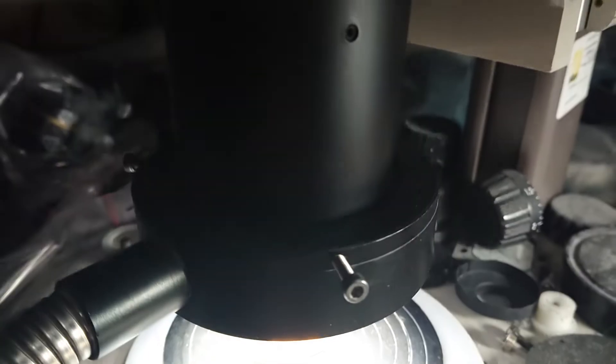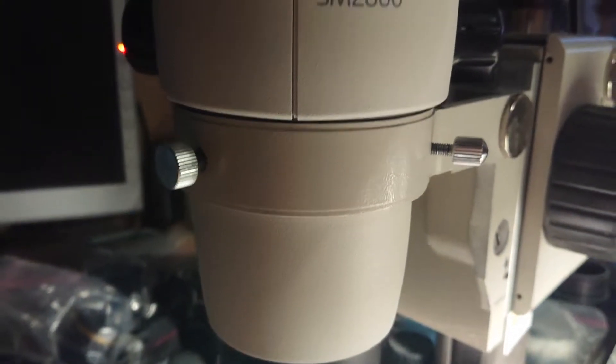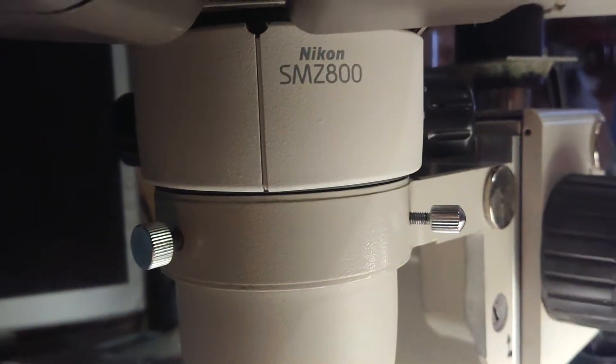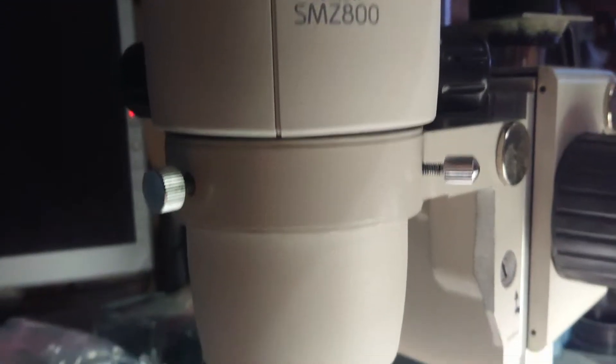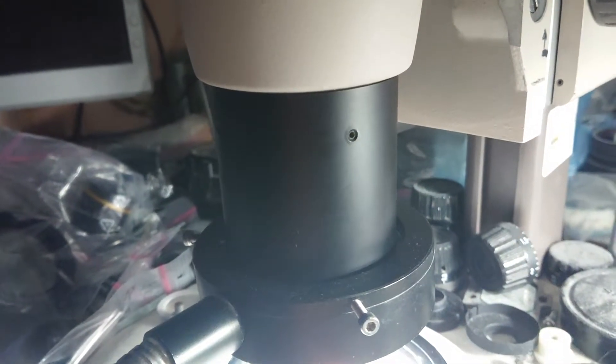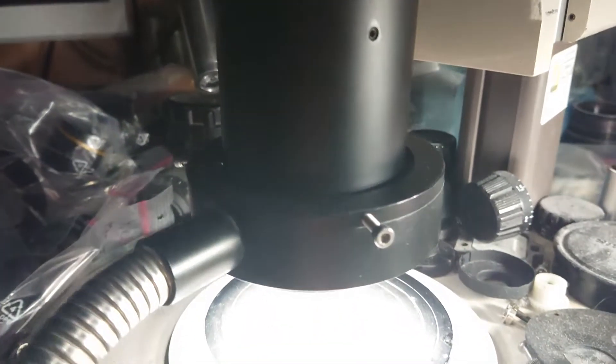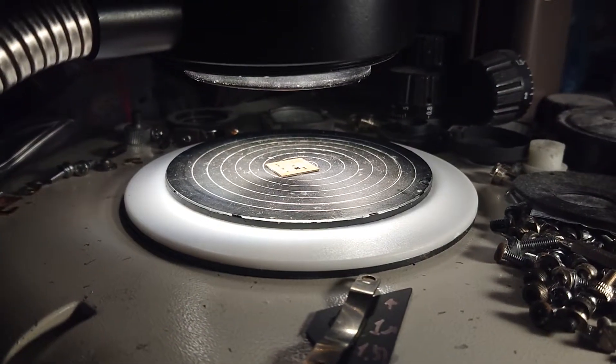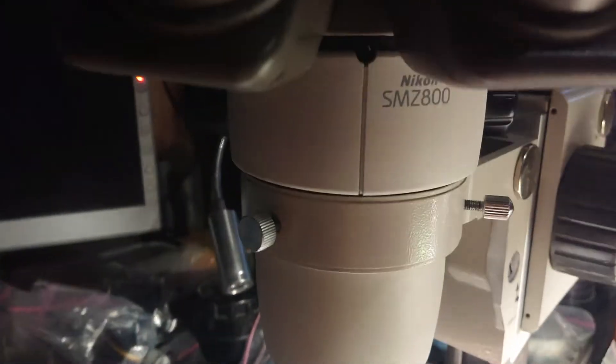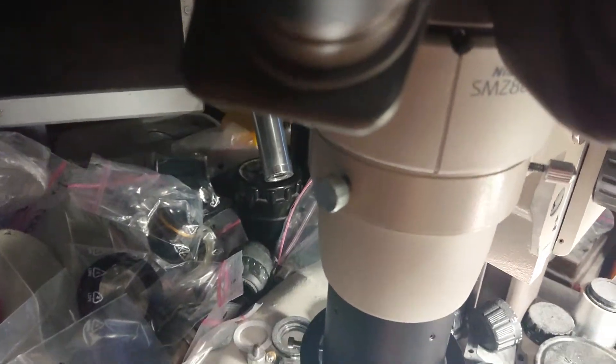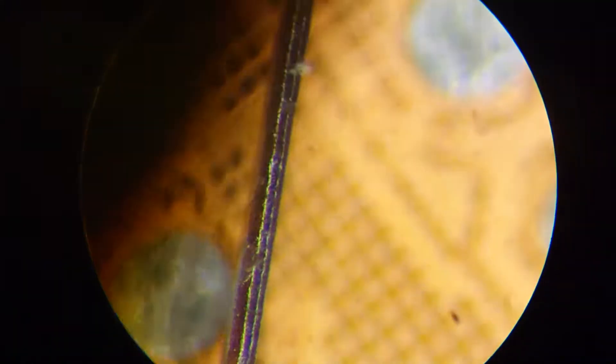But this time we are watching it through the Nikon SMZ800 microscope with Nikon's ED plan 2X objective with a distance of 32 millimeters. Let's try to spot the difference with the previous set.